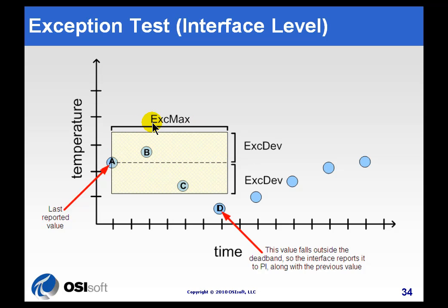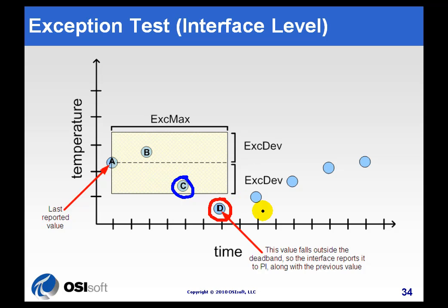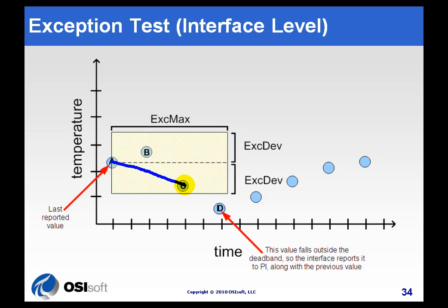So there are two things going on. The XMAX — if it expires, we bring in a value. The second thing is the deviation sets essentially a dead band, and if a value goes outside the dead band, that indicates there's been an exception deviation. What we do is actually bring in the previous value as well. That's the value that goes outside the dead band — we bring in the previous value, and we also bring in the value that goes outside the dead band. The reason we do that is because if we simply brought in the value that violates the dead band, we'd draw a straight line from point A to point D. But by bringing in both the value and the previous value, we draw a more accurate line.